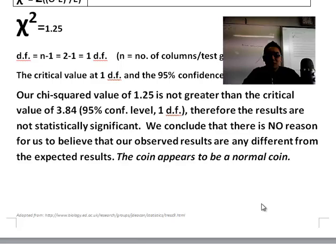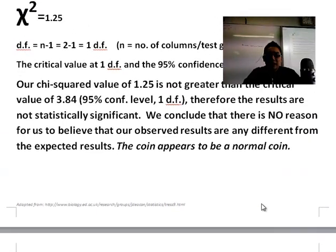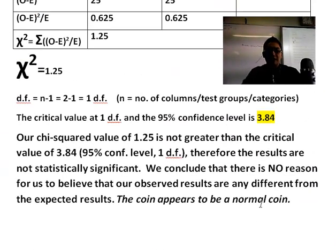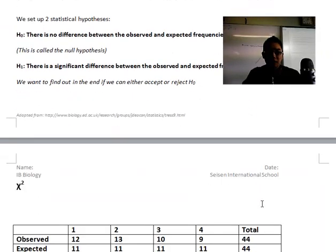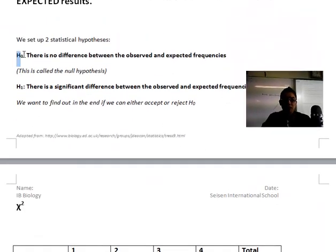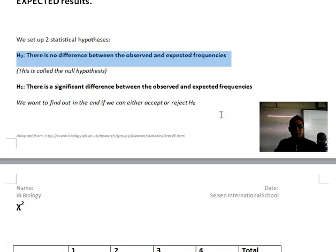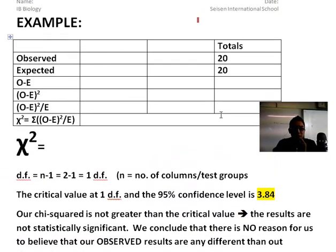The coin appears to be a normal coin. And if you put this all down, then I guess you end up with a situation where you do not reject your null hypothesis. Our chi-squared value did not beat the critical value.